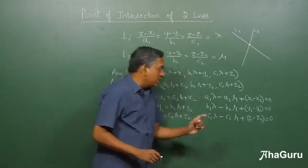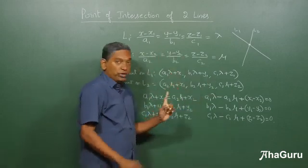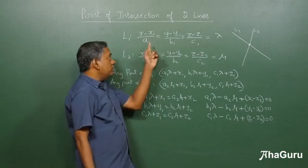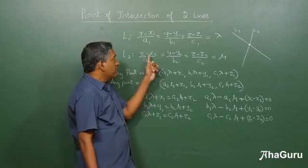Now you see, what are the unknowns here? Lambda and mu we don't know. Remember, both of the equations are given L1 and L2.